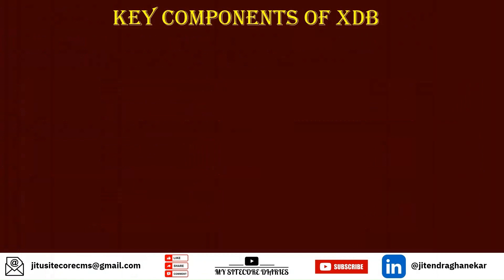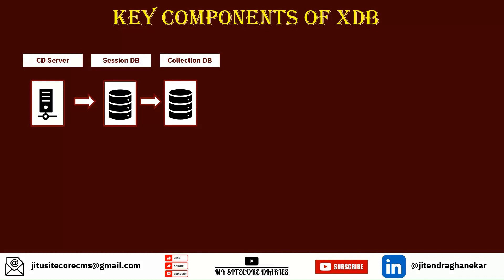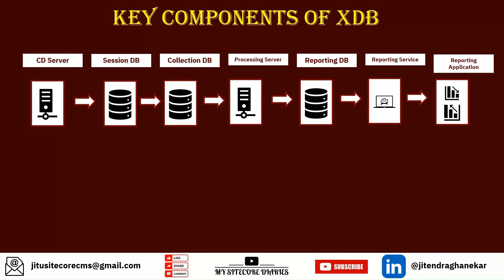Let's see the key components of XDB. On the CD server, customer interactions get stored first in the session DB. That data then gets collected into the Collection DB. It is then processed by the Processing Server through aggregation, converting the raw data into a queryable format, which is stored in the Reporting DB. The Reporting Service can be used as an interface to query the Reporting DB and display results in the reporting application.